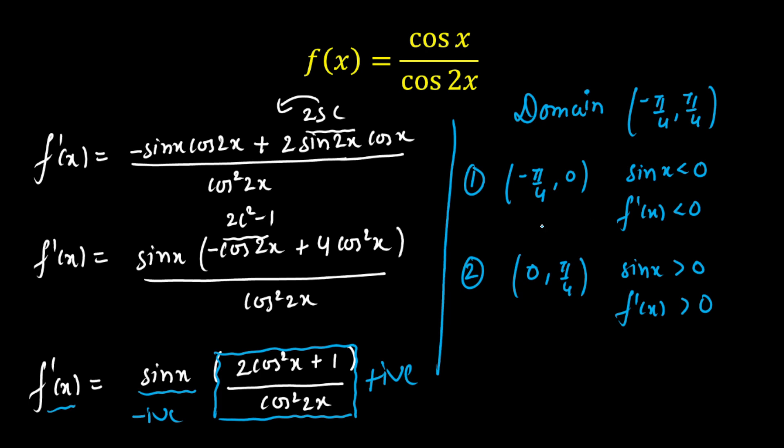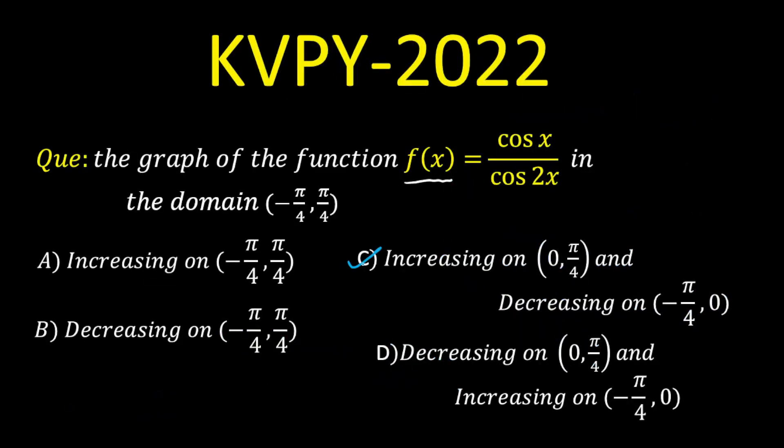So if f prime of x is less than 0 in the first interval, it will be a decreasing function. And f prime of x is positive in this interval, it will be increasing. So out of 4 options, we can check which one is correct now. I think our option is c, option c is correct, increasing in the interval 0 to pi by 4 and decreasing in the interval minus pi by 4 to 0. And that will be all.